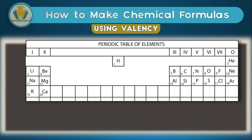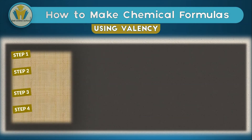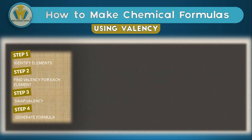If you forget your valences, the periodic table is a very handy tool to remember which elements have which valences. To find valences, we carry out four steps: first, identify the elements; second, find the valency for each element; third, swap the valences — this is the key step, master the swap and you master this method; fourth, generate the formula.